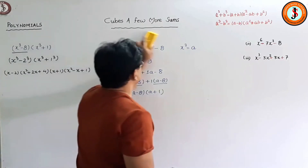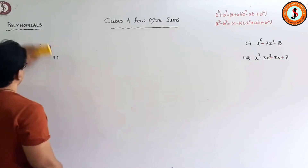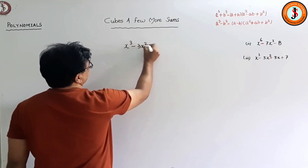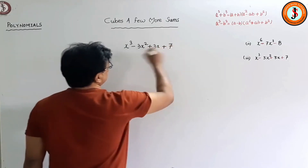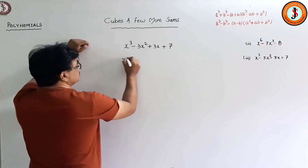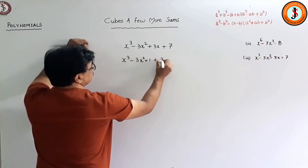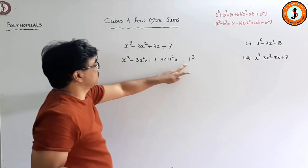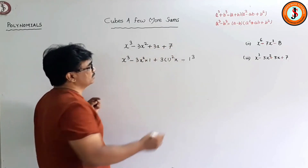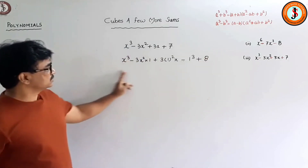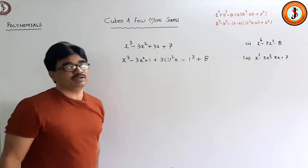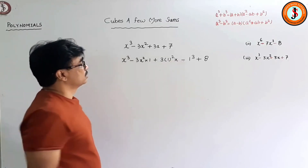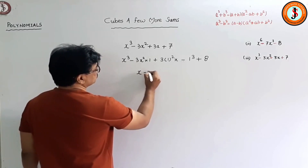Let's have a look now. I'll be using bilingual because I want to help children who understand better in Hindi also. Here this is a cube — I can write x³ - 3x²(1) + 3(1²)(x) - 1³, and then minus 1, but seven is eight minus one. So now you are able to apply the formula: a³ - 3a²b + 3ab² - b³, which gives (x - 1)³.